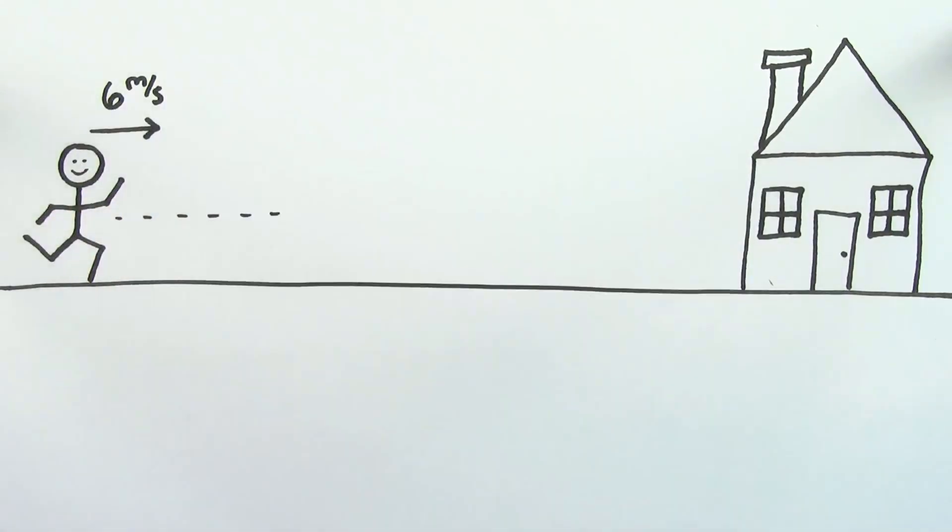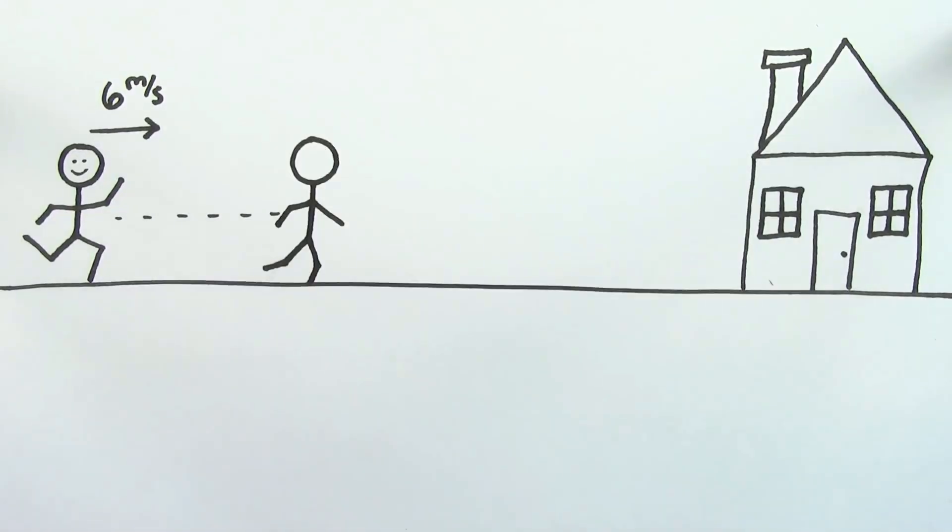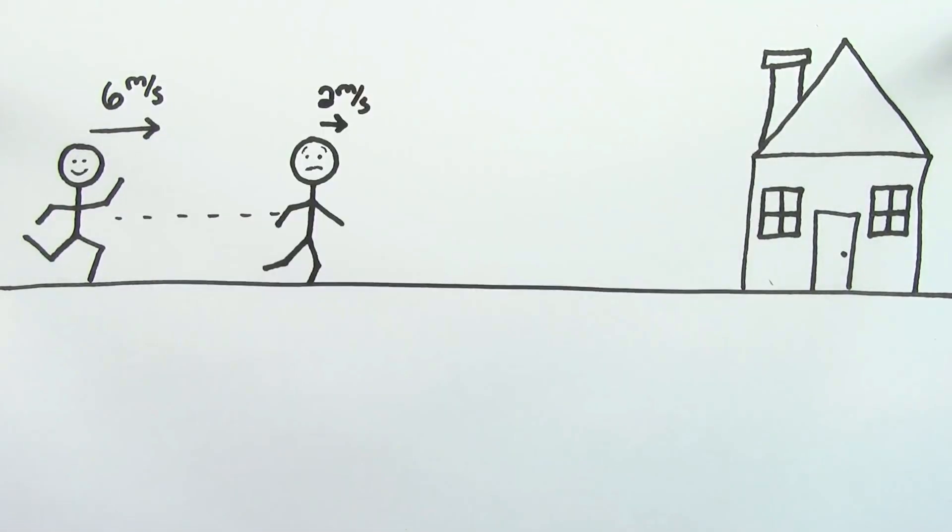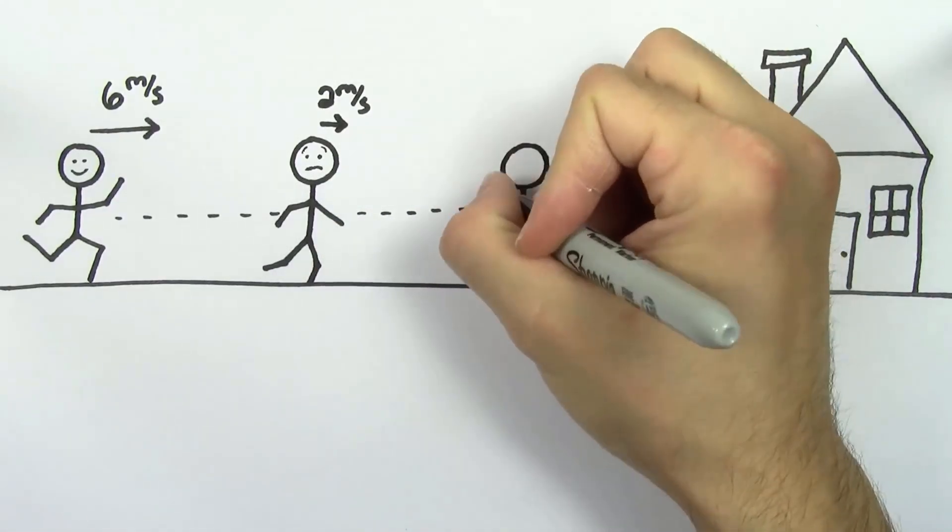You're pretty motivated to get home, so say you start running at 6 meters per second. Maybe it's been a while since the last time you ran, so you have to slow down a little bit to 2 meters per second.